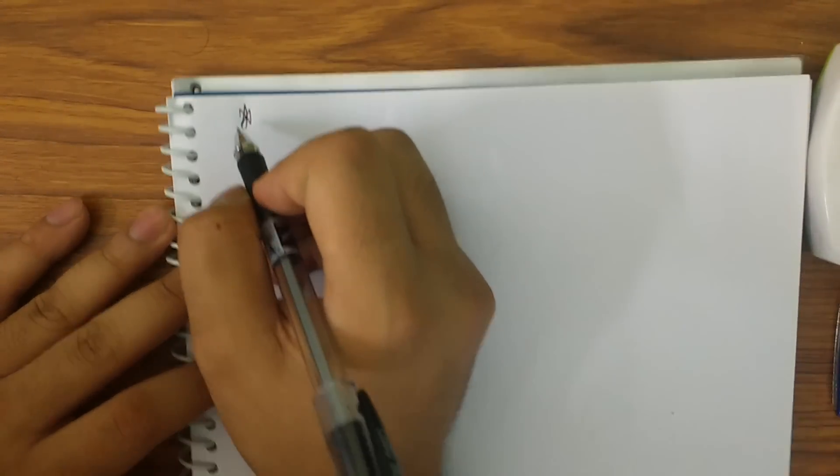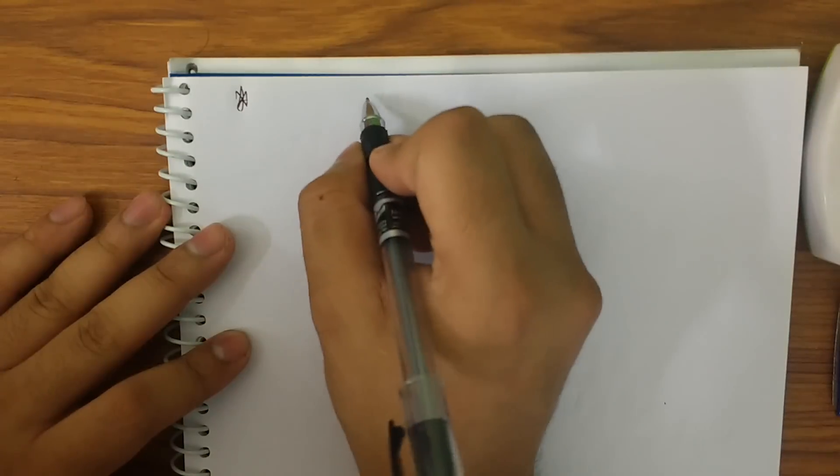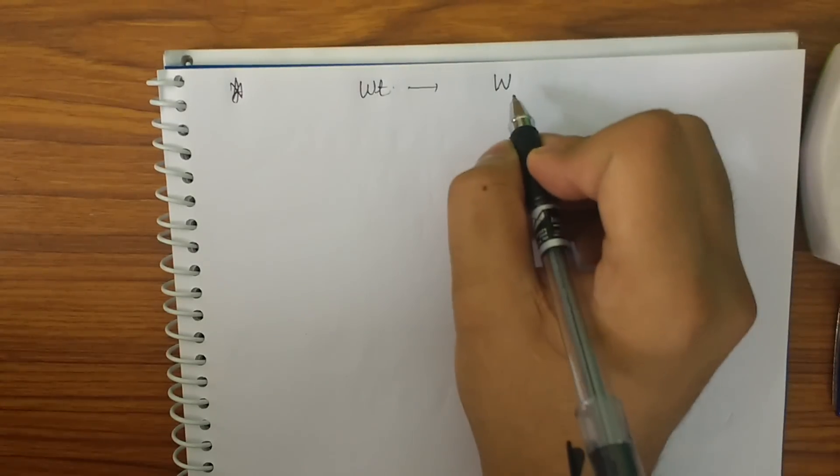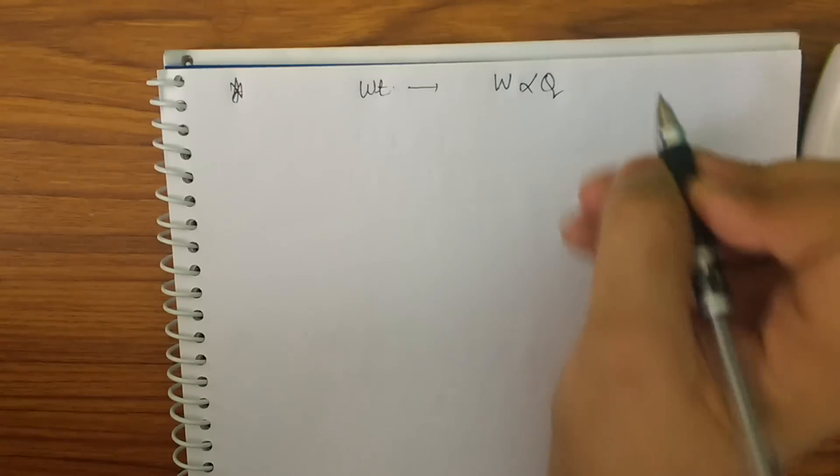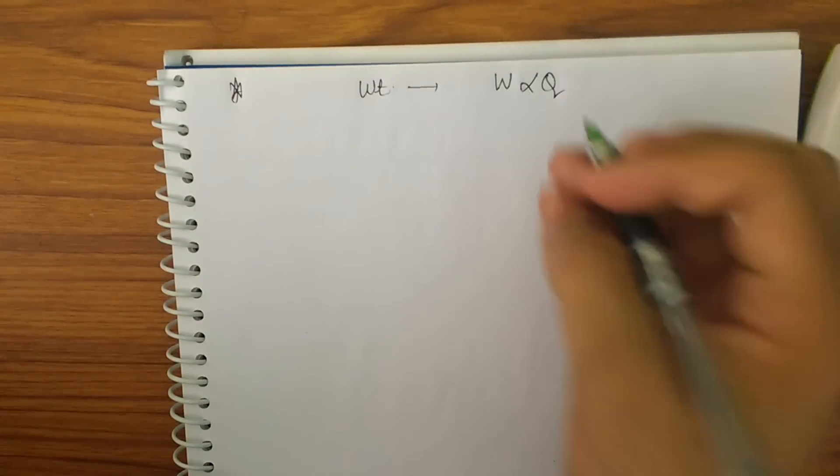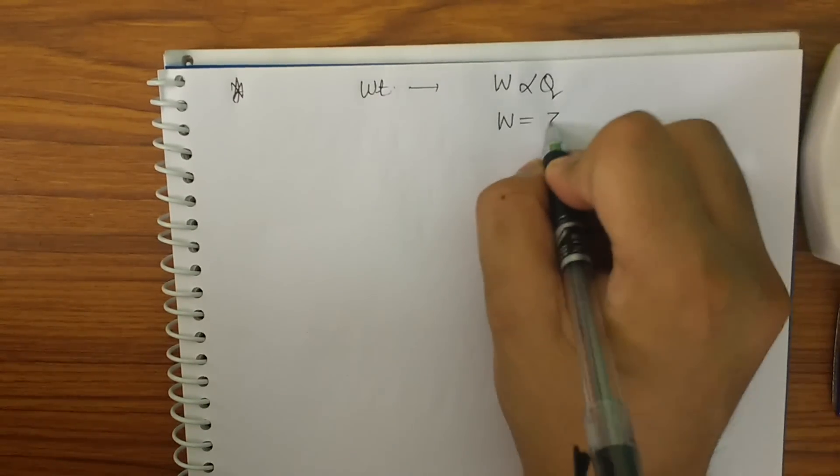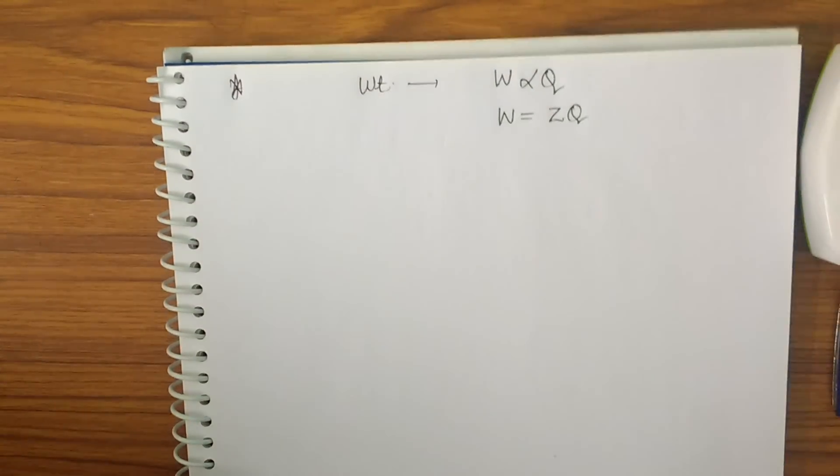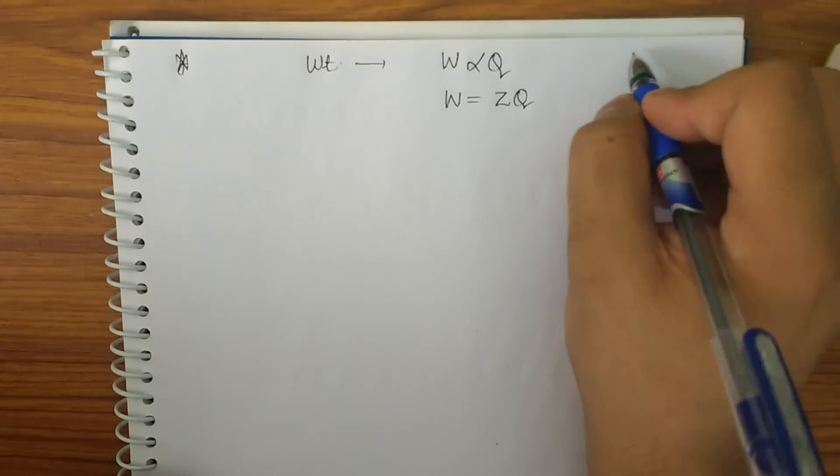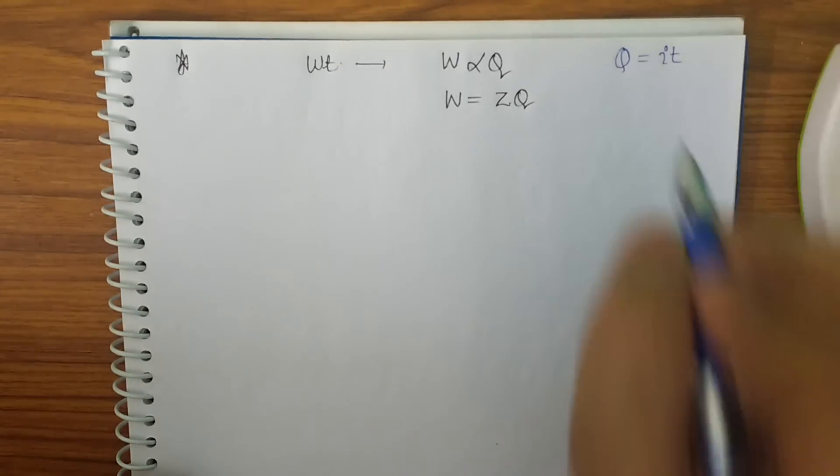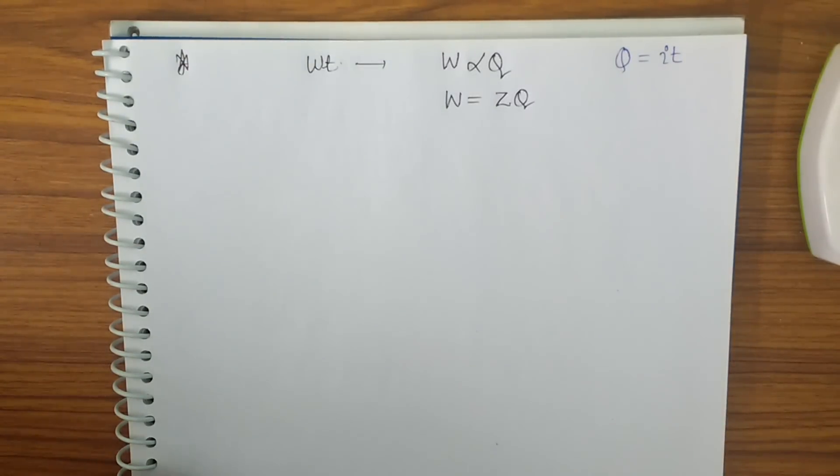So what is the Faraday's law of electrolysis? It says that the amount or weight deposited of any substance during the electrolysis will be directly proportional to the amount of charge passed. So we can say weight or we can say W is directly proportional to Q. Now replacing this Q, we want to get a proportionality constant. So that is W is equal to Z into Q. Now Q, we know from basics of electrodynamics that Q is equal to IT.